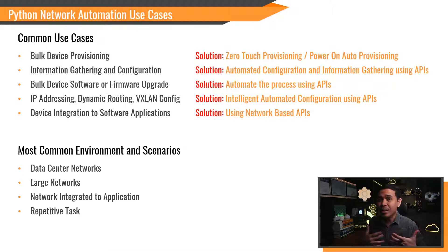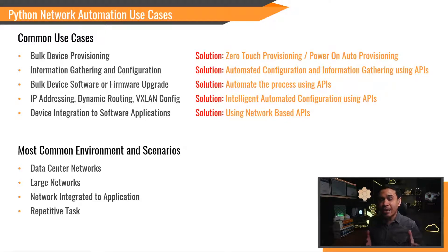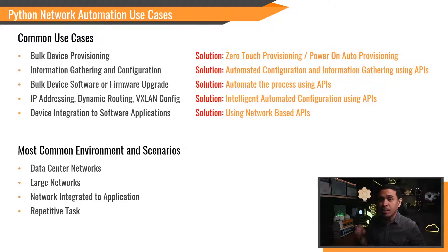All the use cases I mentioned are features already available in Software-Defined Networking (SDN) such as Cisco ACI, Arista Cloud Vision, and Juniper Contrail. This goes back to question number two: are there any existing tools or features? If you have Cisco ACI, for example, you probably don't need Python automation for most of the use cases mentioned. There will be different use cases though, like automating policies such as EPGs, bridge domains, and contracts.